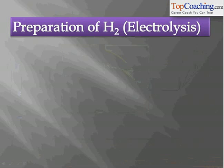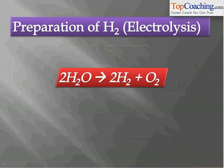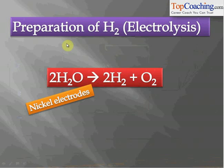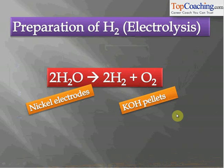How is hydrogen prepared? There are several methods. The first important method — also used industrially when pure hydrogen is required — is the electrolysis of water. When electric current is passed through water, hydrogen and oxygen gases are evolved. Nickel electrodes are generally used, and KOH pellets are added to absorb excess moisture.